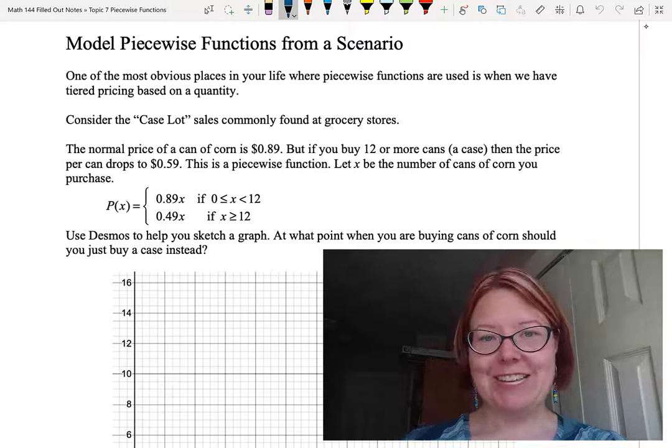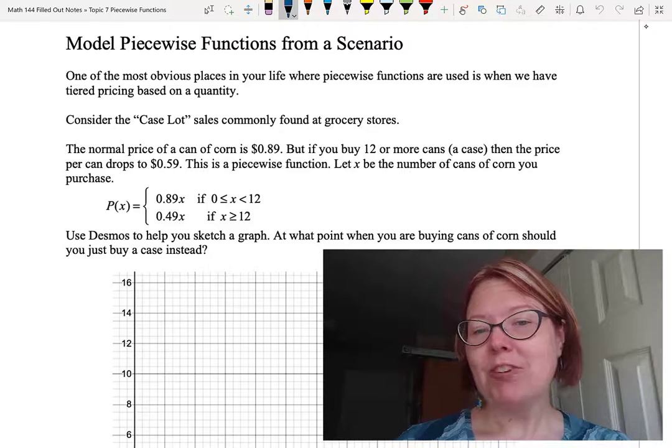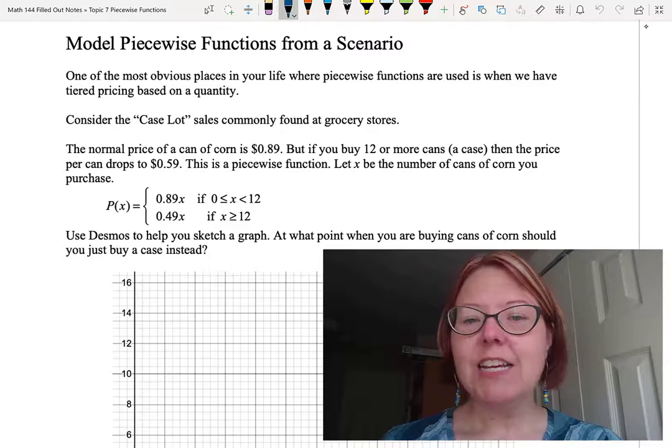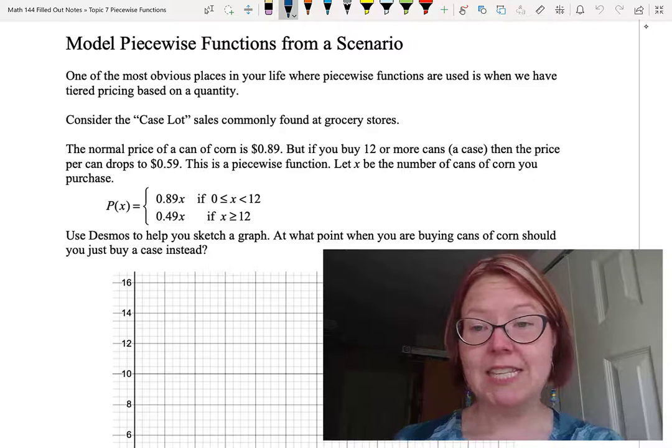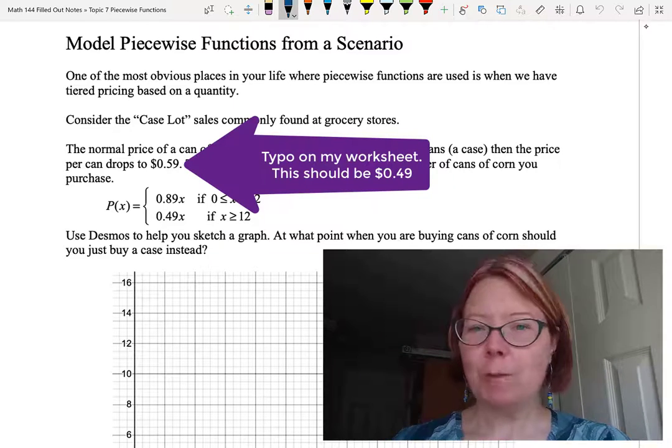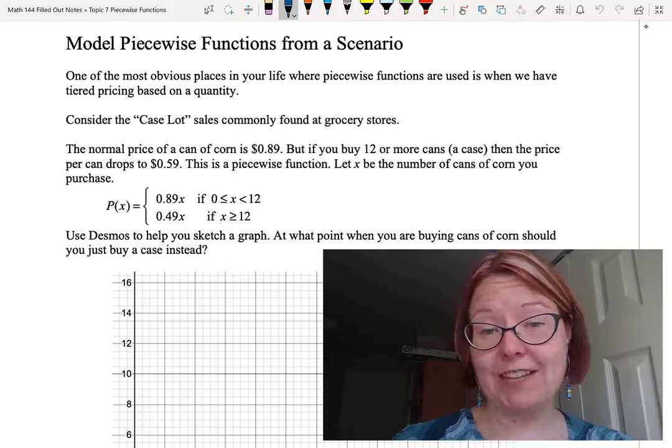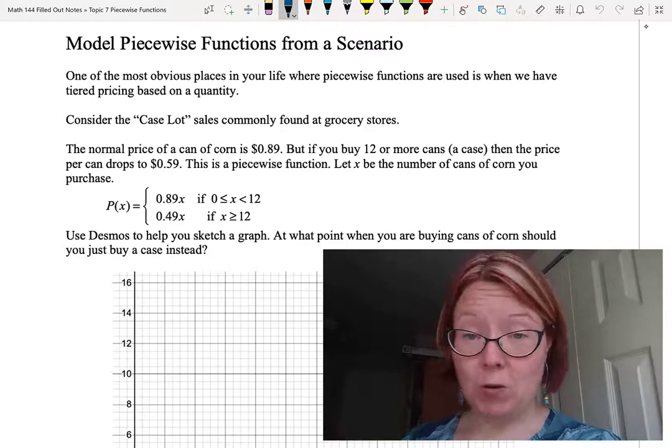Consider case lot sales found commonly at grocery stores. The normal price of a can of corn at my grocery store is 89 cents, but if you buy 12 or more cans, which is a case, then the price per can drops to 49 cents. This is a piecewise function because there's a different price when you buy 0 to 12 cans than when you buy 12 or more cans.